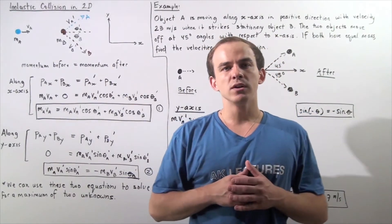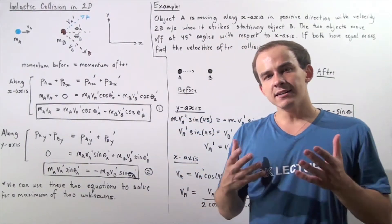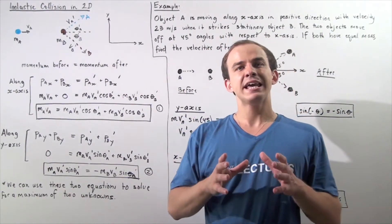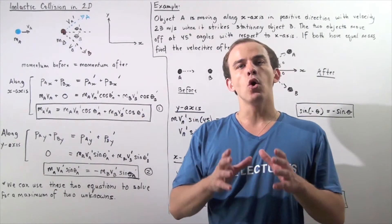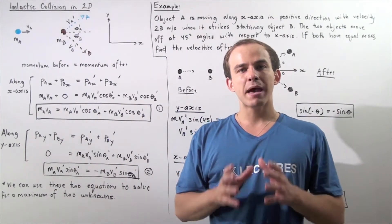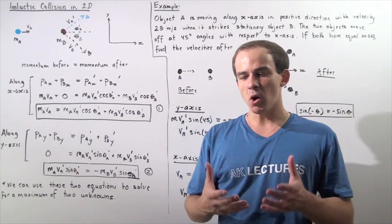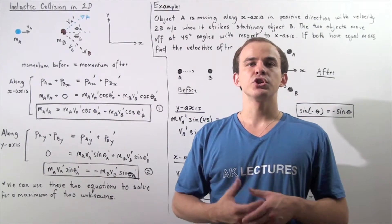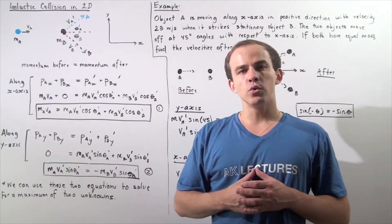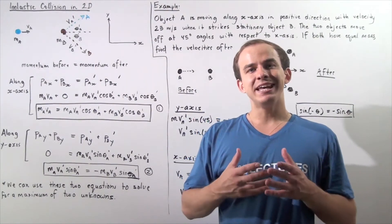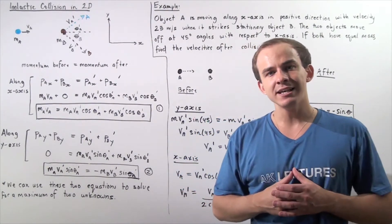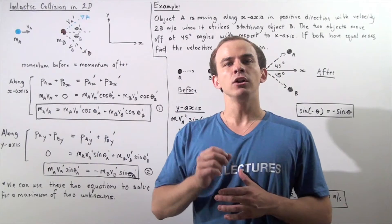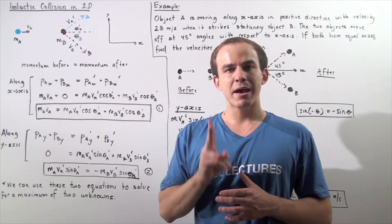As of now, we spoke about inelastic collisions that take place along one dimension — head-on inelastic collisions. Now we're going to examine inelastic collisions that take place along two dimensions.